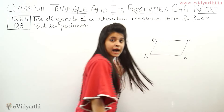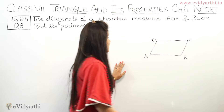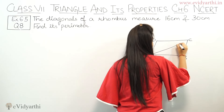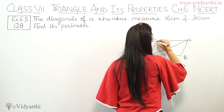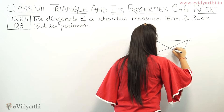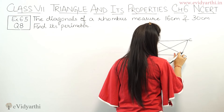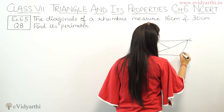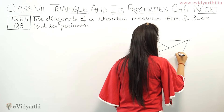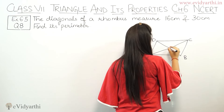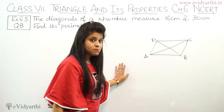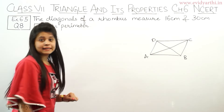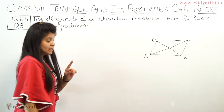Now this rhombus has diagonals given — this one and this one. So we know the diagonals. What do we need to find? The perimeter.